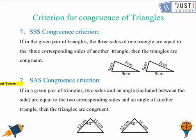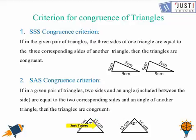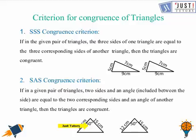Then we have SAS — that is, Side-Angle-Side congruence criterion. It states that if in a given pair of triangles, two sides and an angle included between those two sides are equal to the corresponding sides and angle of another triangle, then the triangles are congruent. As we can see here, one side is 12 centimeters and so is the corresponding side, another side is 15 centimeters and so is the other, and the included angle between both sides is 50 degrees and the same here. So these two triangles are congruent by the SAS criterion.